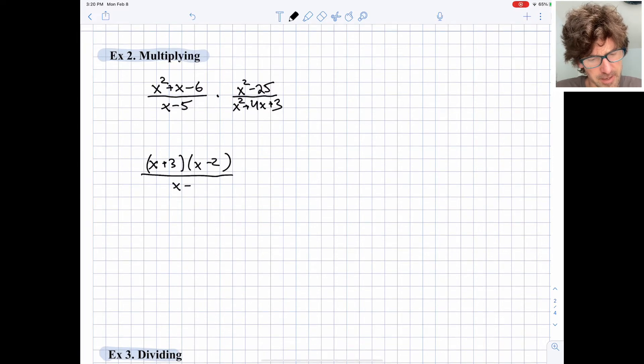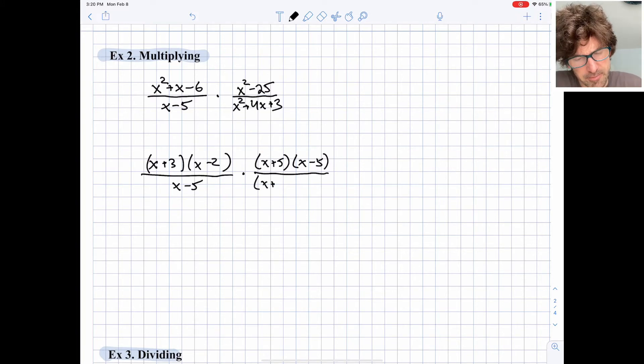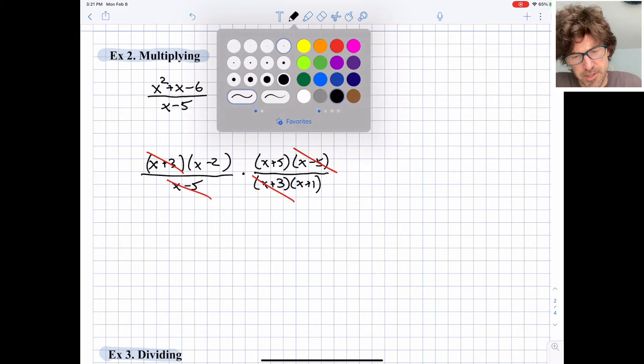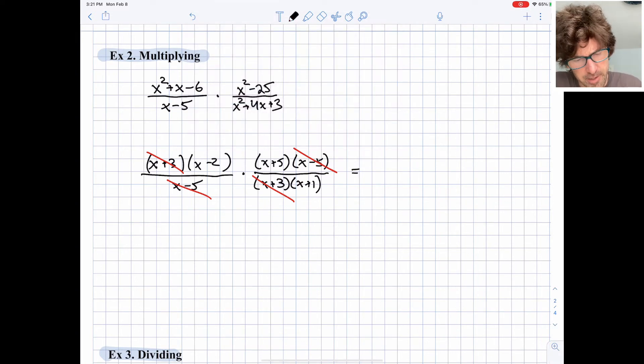And then x minus 5 down below. And then we have x plus 5, x minus 5. That's an easy difference of two squares. And then the denominator of my second fraction is x plus 3, x plus 1. So let's cancel what we can. We have an x minus 5 up top and down below. We have an x plus 3 up top and down below. And then we'll just grab our terms that we need and write them in multiplied form here.